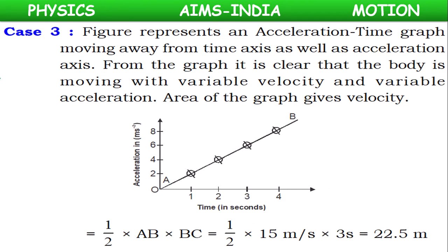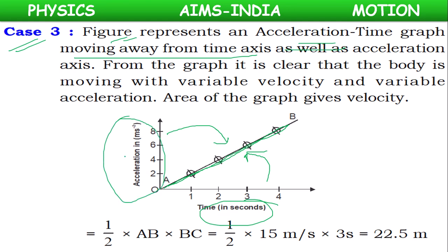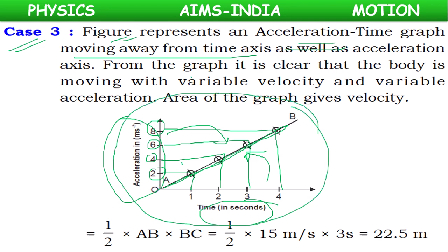Another case: the acceleration-time graph AB is moving away from both the time axis and the acceleration axis — neither parallel to the time axis nor parallel to the acceleration axis. Checking points: (1,2), (2,4), (3,6), (4,8) — the acceleration is changing. So both velocity and acceleration will change, and the body travels with variable velocity and variable acceleration.